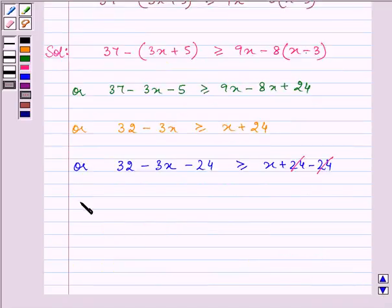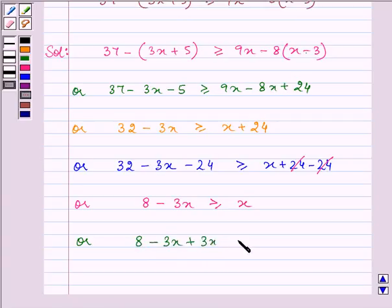After simplification, we have 8 minus 3x is greater than equal to x, or we can add 3x to both the sides and we have 8 minus 3x plus 3x is greater than equal to x plus 3x.